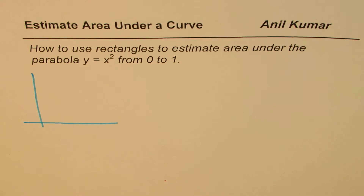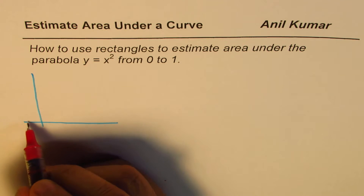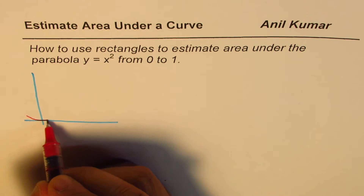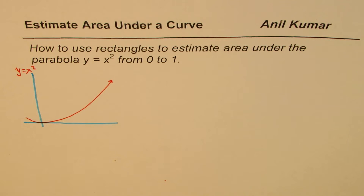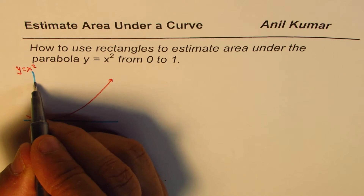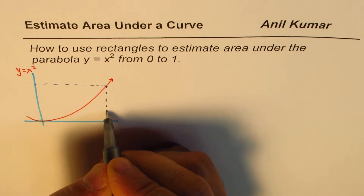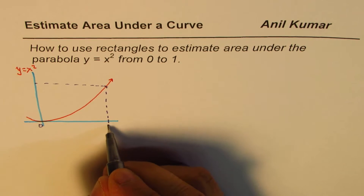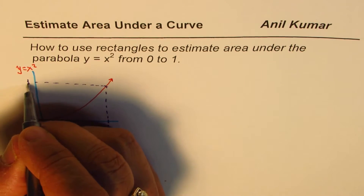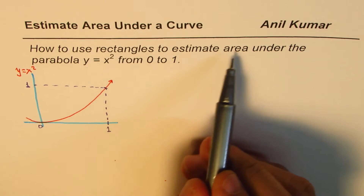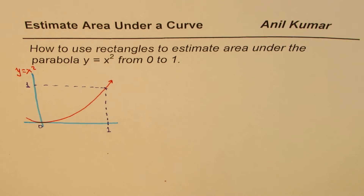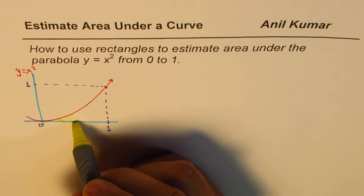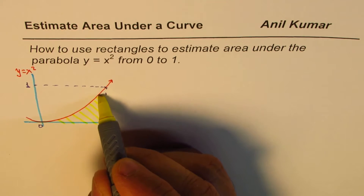Let's begin with the first one — this is the parabola y equals x squared. I'll make it slightly wider so that I can explain my points. So the curve is kind of like this. This is 0 and that is 1. If I put 1 here, 1 squared is also 1. When we say how to use rectangles to estimate area under the parabola y equals x squared, this is also kind of a rectangle and we are interested in the area under the curve.